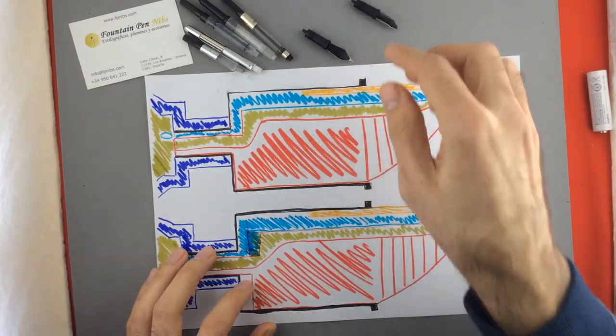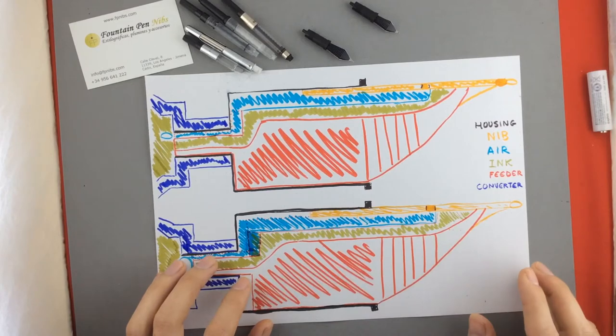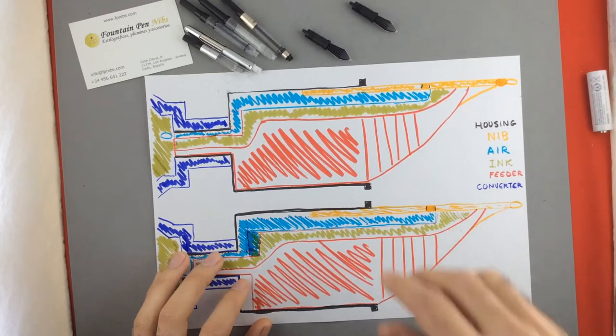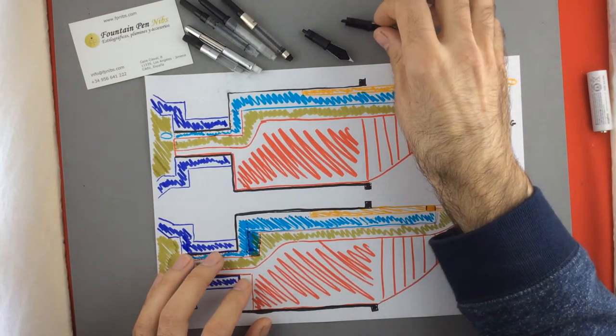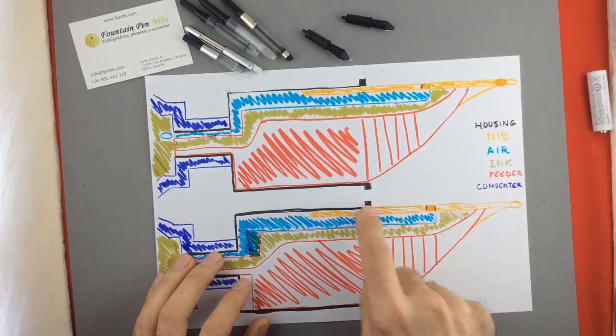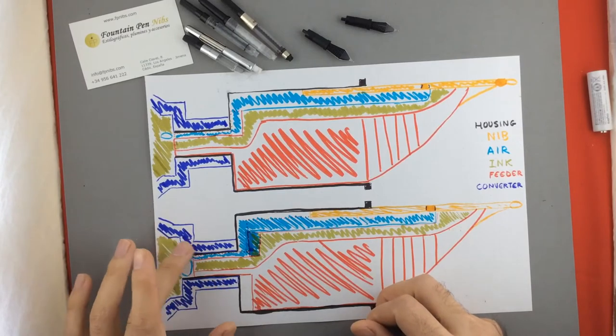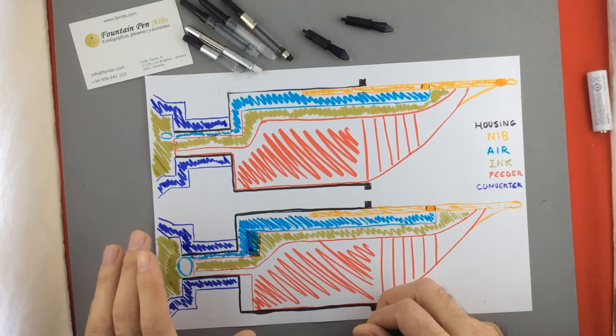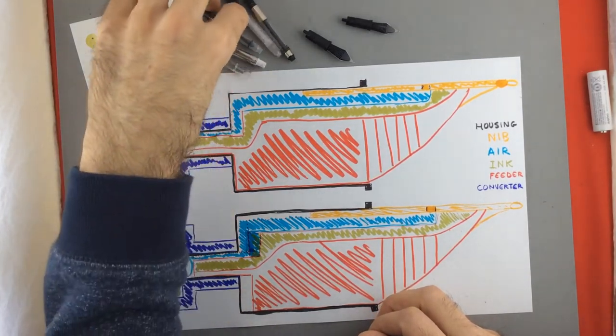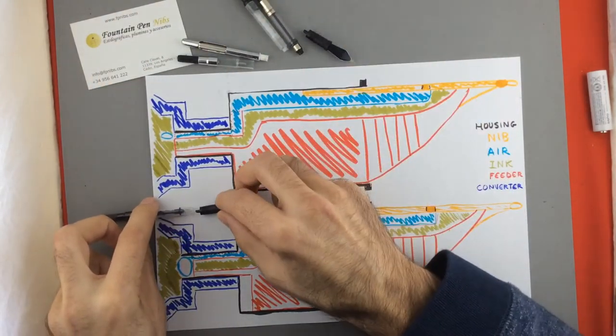So I have drawn on this paper what would be a section of the complete housing, feeder, nib and the reservoir. In this case it will be like this. All right, can you see it?